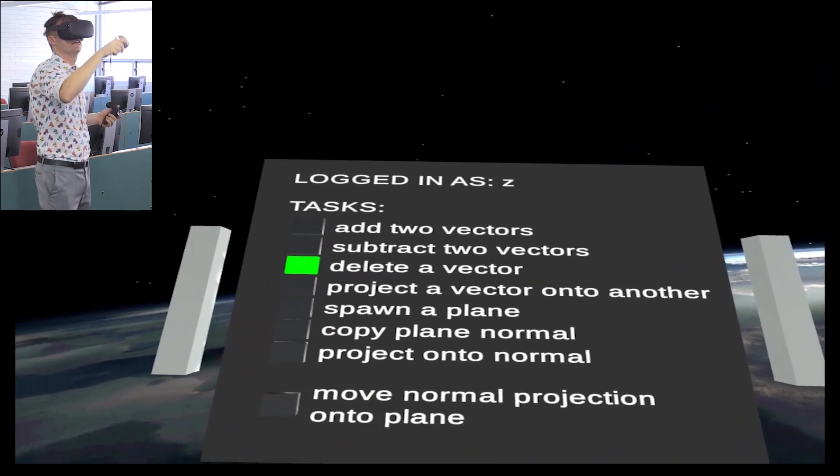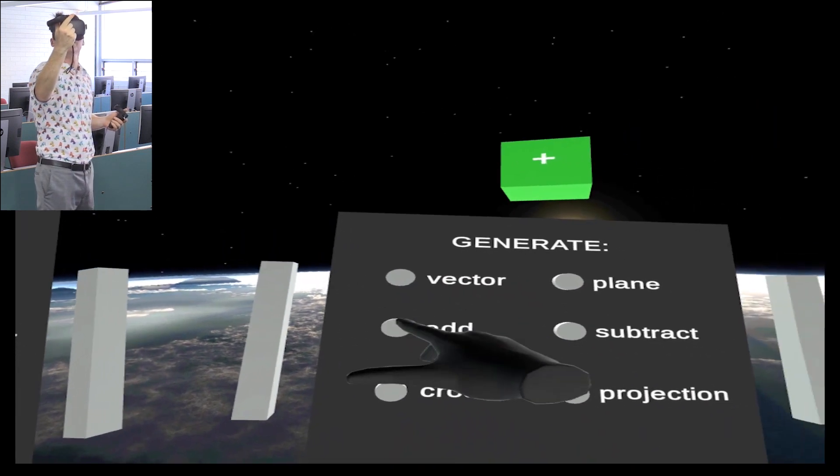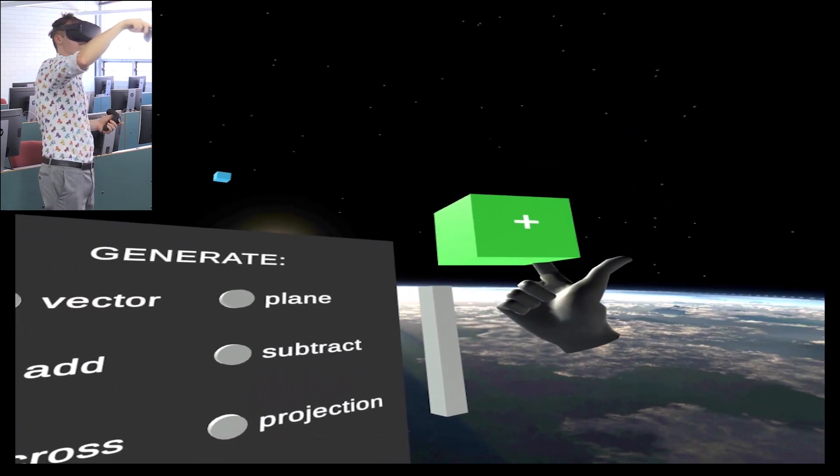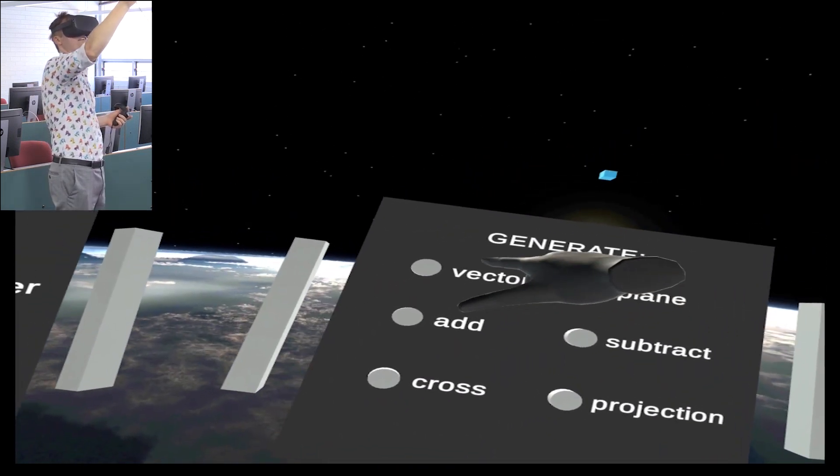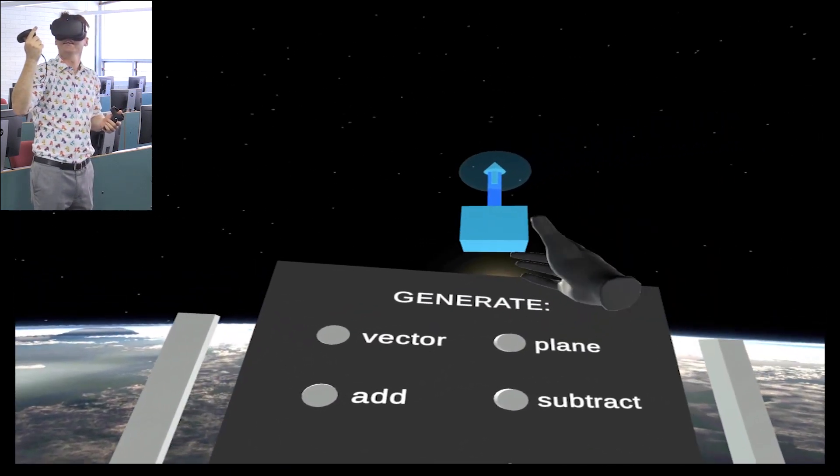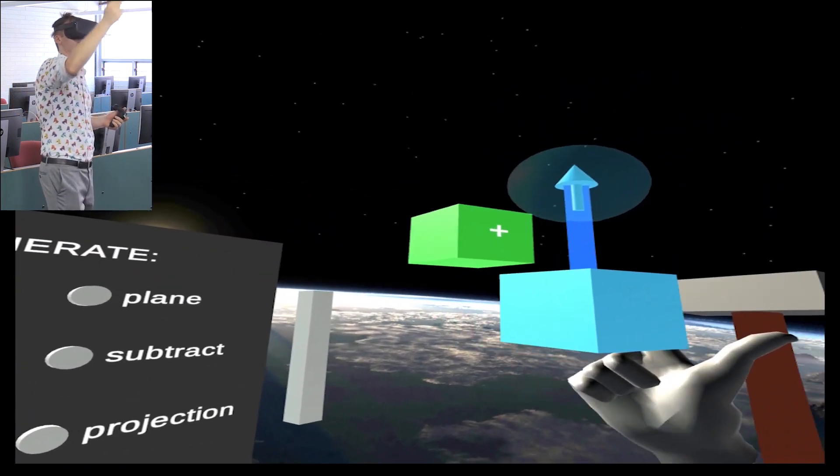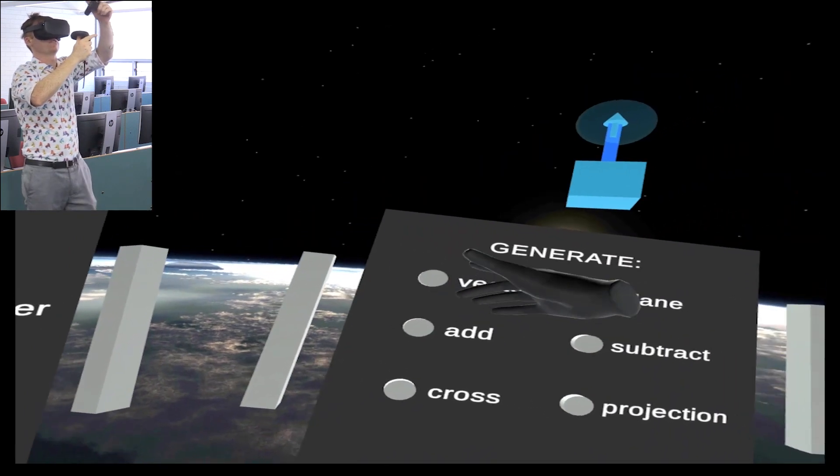So I'm going to get a vector. Oh, I press add. That's add. Let me try that again. Vector. There we go. Must have mush the keypad. There's a vector. There's another vector. Now we have two vectors.